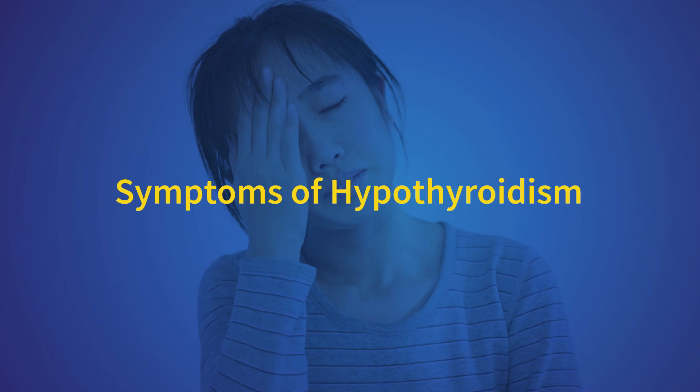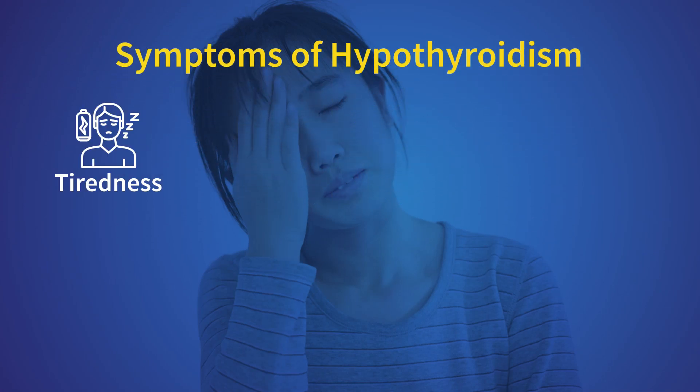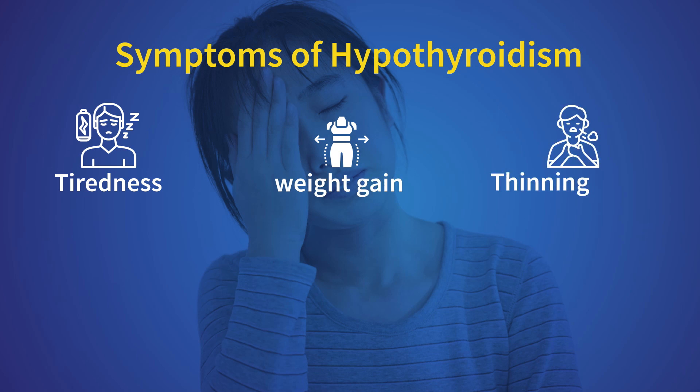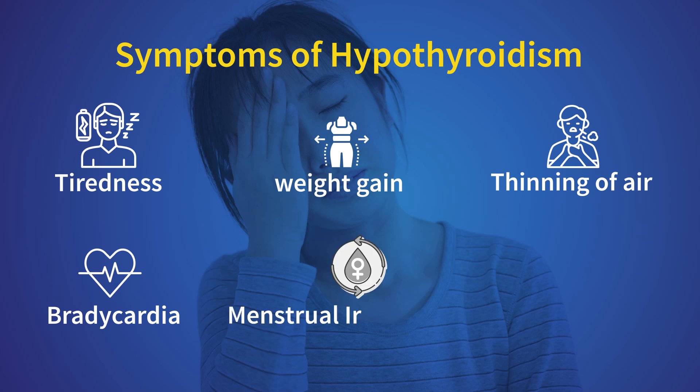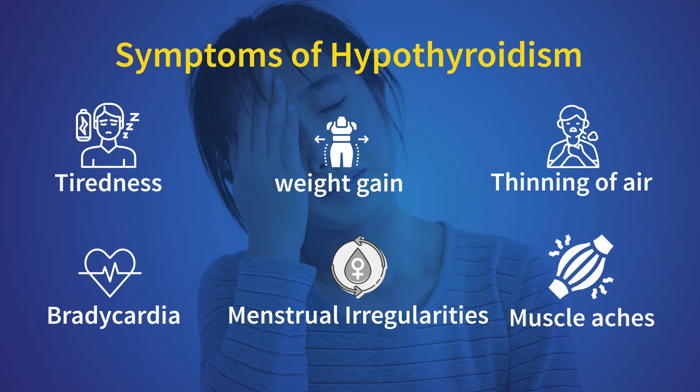Hypothyroidism is more common in females. It usually develops over a period of years and the symptoms depend on the severity of the condition. You may have tiredness, weight gain, coarse hair or thinning of hair, decreased heart rate which we call bradycardia, menstrual irregularities, heaviness or irregularity in periods, and muscle aches. When all these symptoms are present, we evaluate and do the necessary tests.